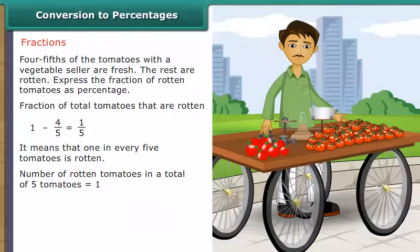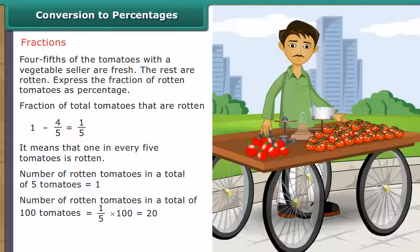Number of rotten tomatoes in a total of 100 tomatoes is equal to 1 upon 5 into 100, which equals 20. Therefore, 20% of the total tomatoes is rotten.